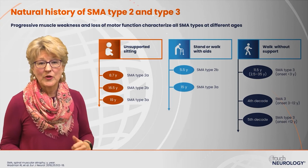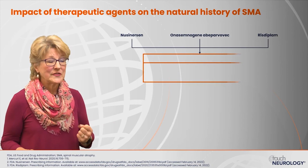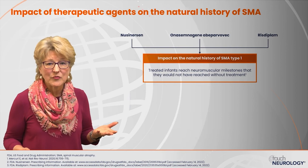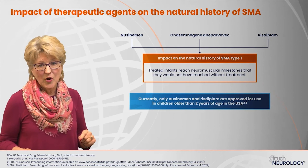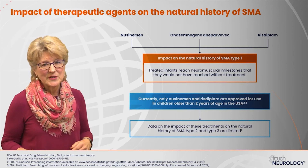What is the impact of these therapeutic agents on the natural history of spinal muscular atrophy? We have three FDA-approved agents. Treated infants with type 1 SMA have reached neuromuscular milestones they would never have reached without treatment. Currently, only nusinersen and risdiplam are approved for use in children older than two years of age, so the data on treatment impact on the natural history of type 2 and type 3 is more limited than for type 1.